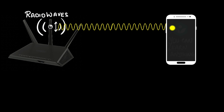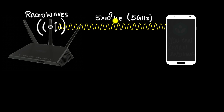But how do you transmit any information? Wi-fi operates at about 5 gigahertz — 5 billion hertz — meaning the electrons in the transmitter are oscillating about 5 billion times per second, and the electrons in your phone's antenna will also oscillate 5 billion times per second. But where exactly is the information being transferred?